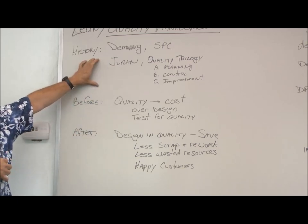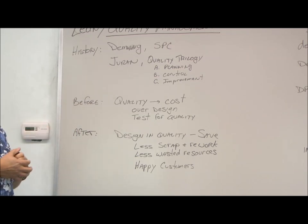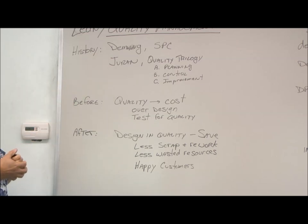Duran led the quality revolution at Toyota. Just think of how, especially in the 60s, 70s, Toyota, Honda had such great reputation for quality cars. And that was all because of Duran and also the early work of Edward Deming.